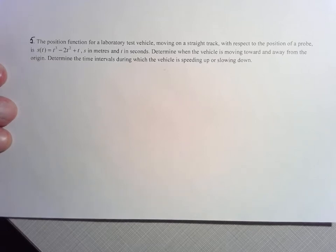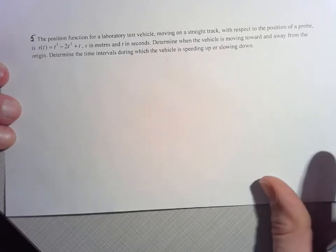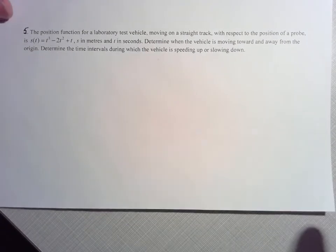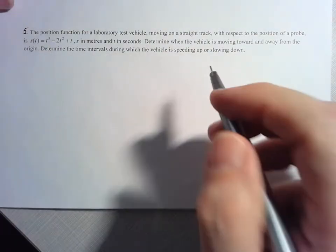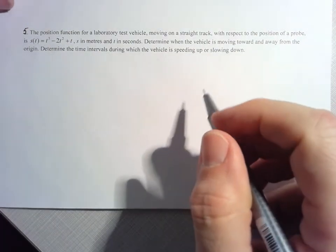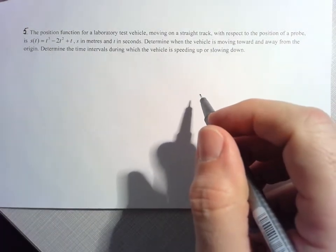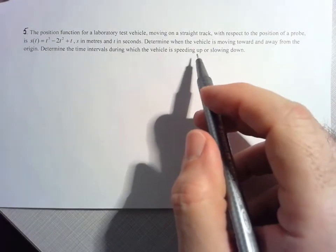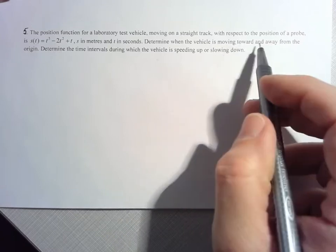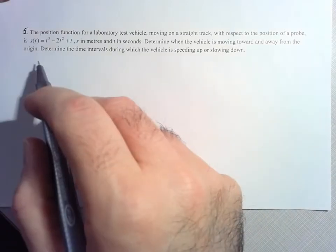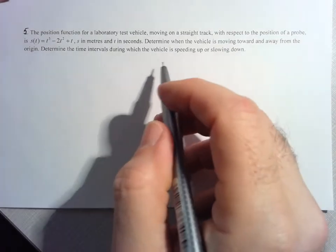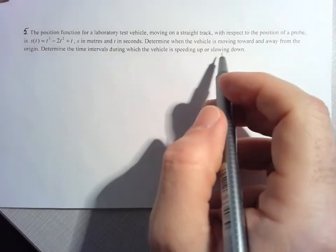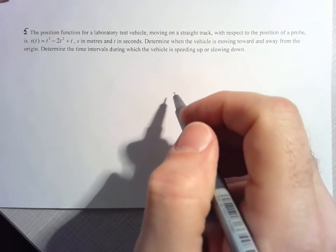Hi folks. We're going to take a look at the last question from the Lesson 3 worksheet. Here they give us a position function and they're asking us to find two things. First, they want to know when the vehicle is moving toward and away from the origin, and then when the vehicle is speeding up or slowing down.